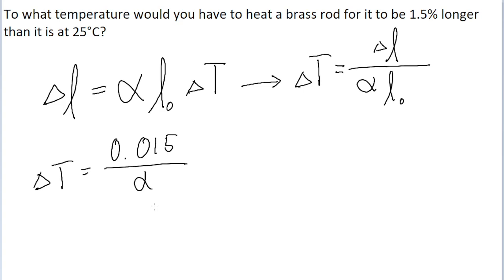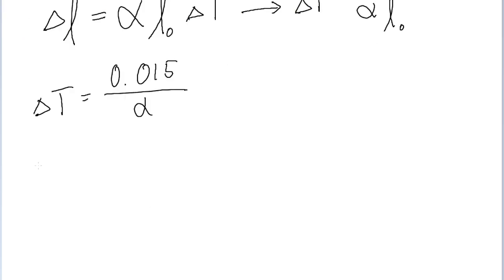Also recall that our final thing that we're looking for is not necessarily the change in temperature, but the final temperature based on the initial temperature that has been given to us. So perhaps a better way to represent what we're trying to find is the final temperature is equal to the initial temperature plus this change in temperature that we've already defined.